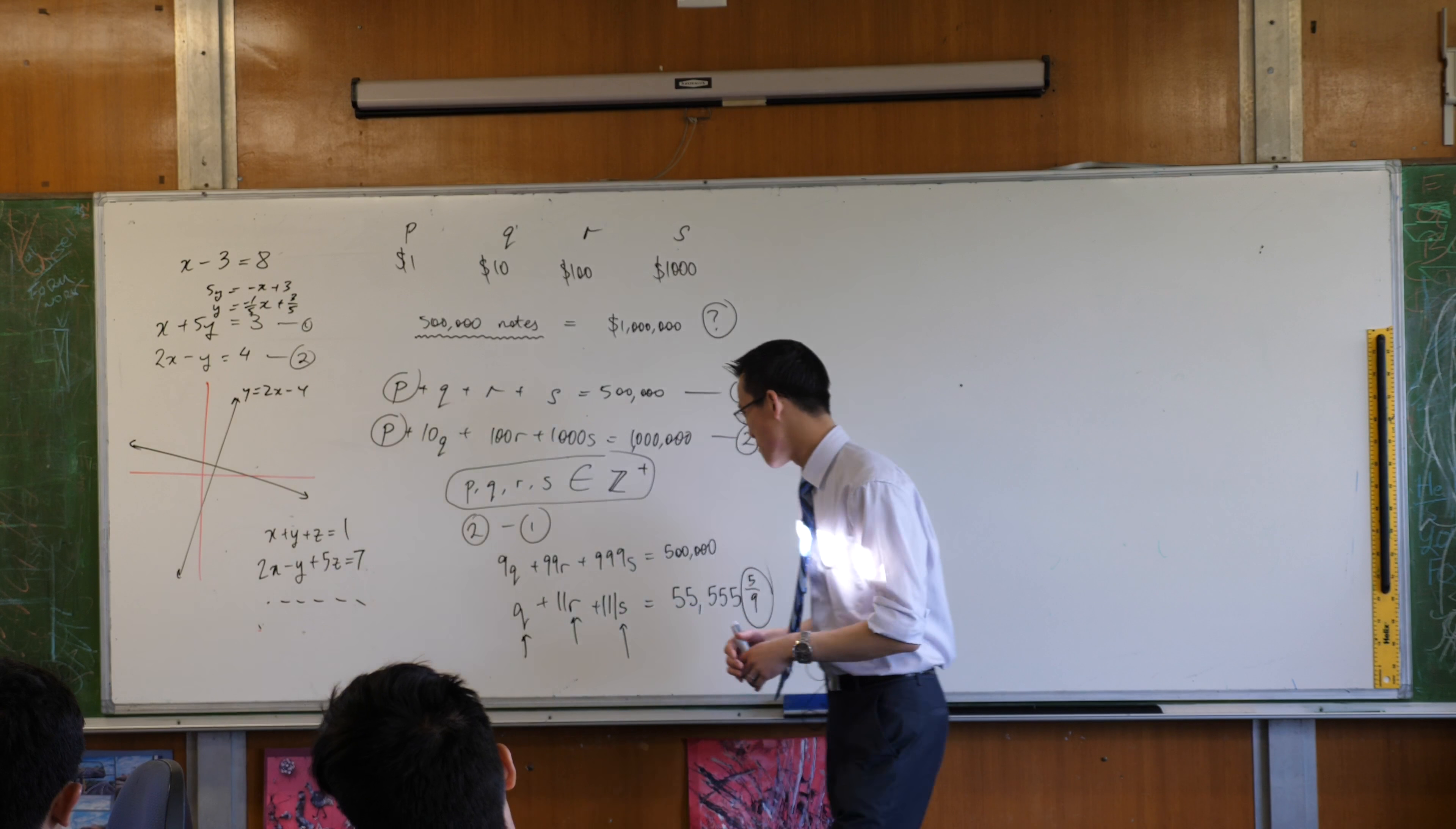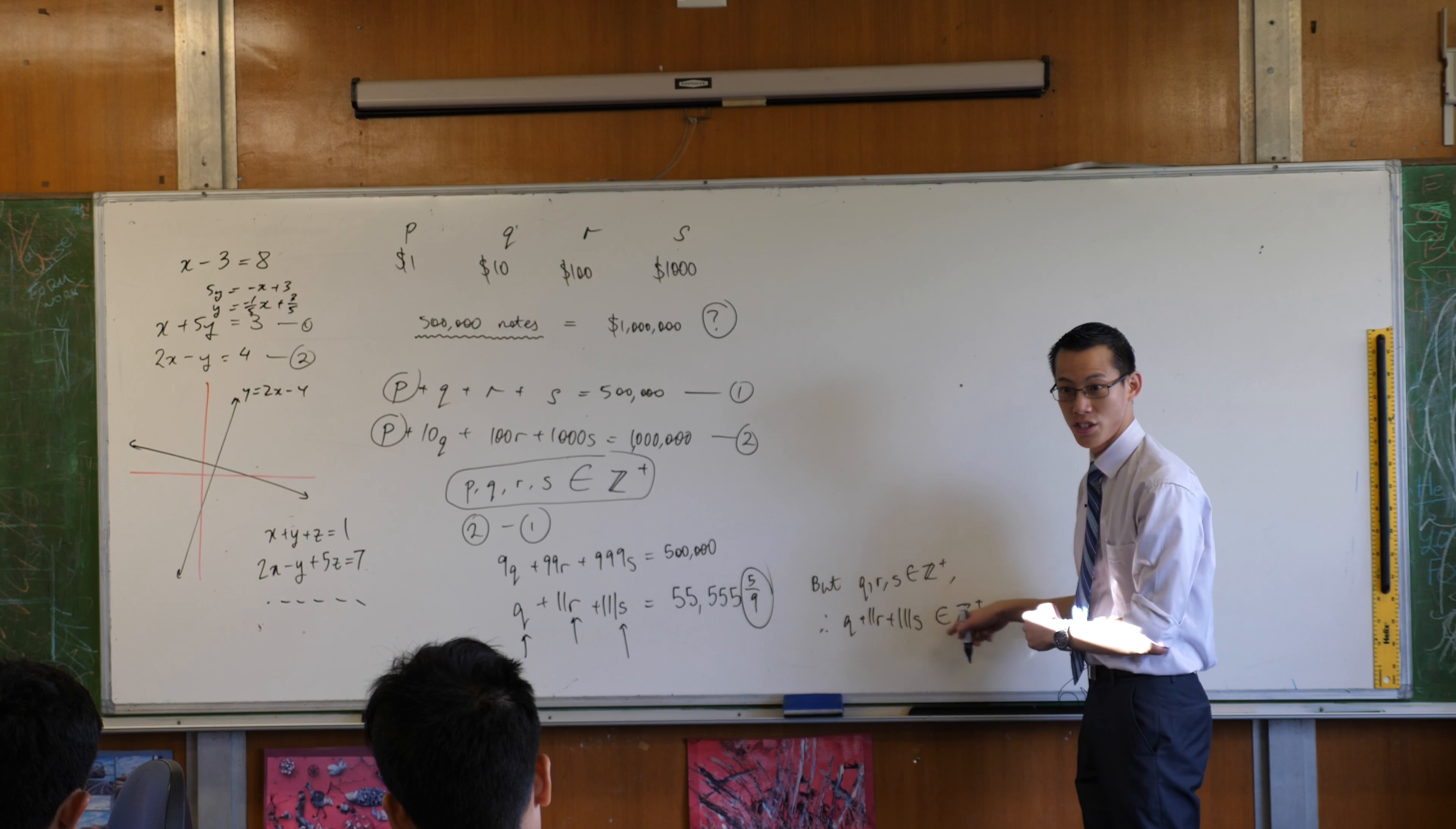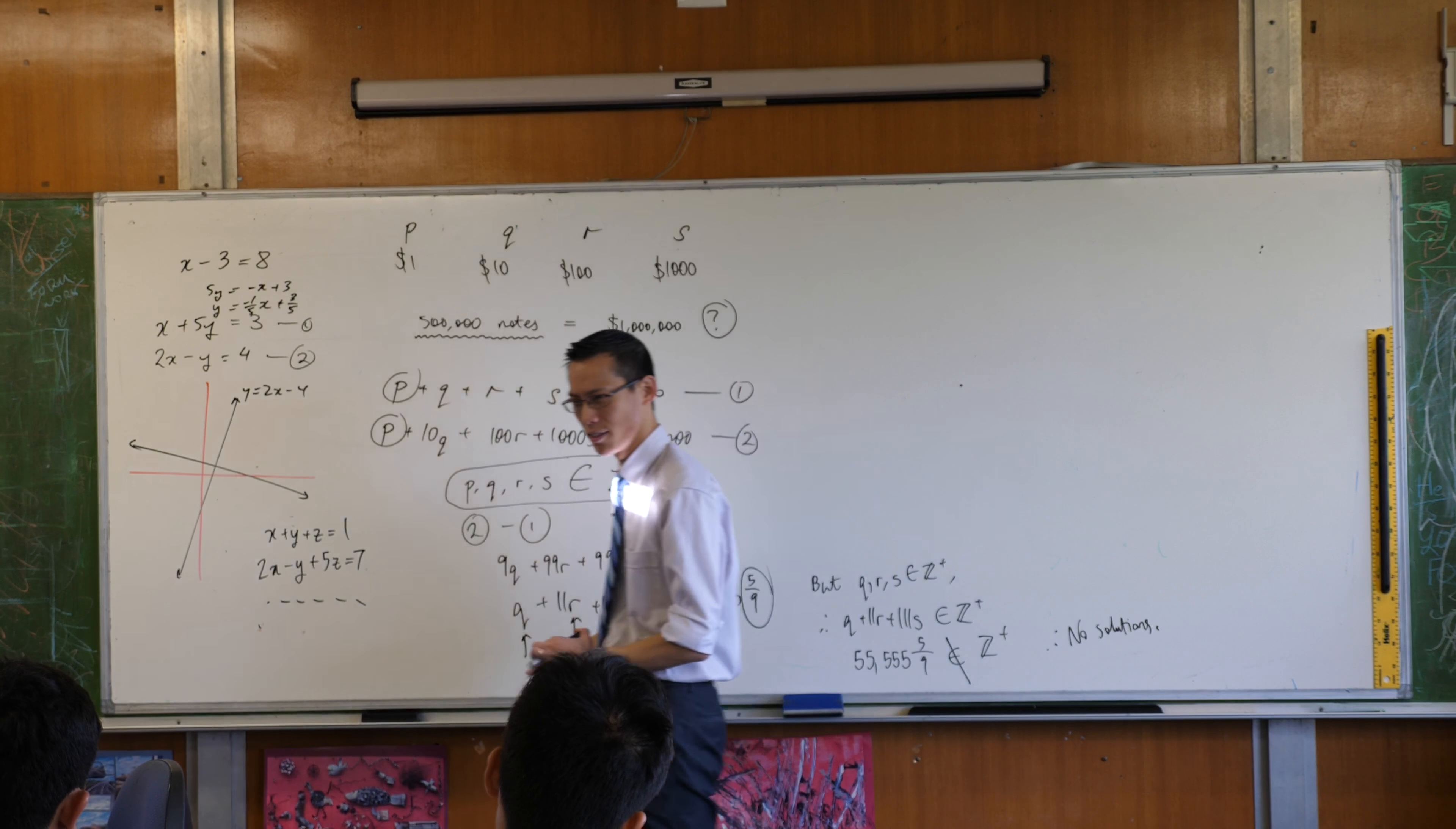So how would I explain this? My conclusion would be, I would say, but Q, R and S are positive integers. Therefore, this thing over here, Q plus 11R plus 111S, that's also a positive integer. Do you agree? When you add these positive integers together and multiply them by more positive integers, you only get positive integers out the other end. 55,555 and 5 ninths is not, it's not a positive integer. Therefore, there are no solutions. Does that make sense? Do you see the way I logically constructed that?